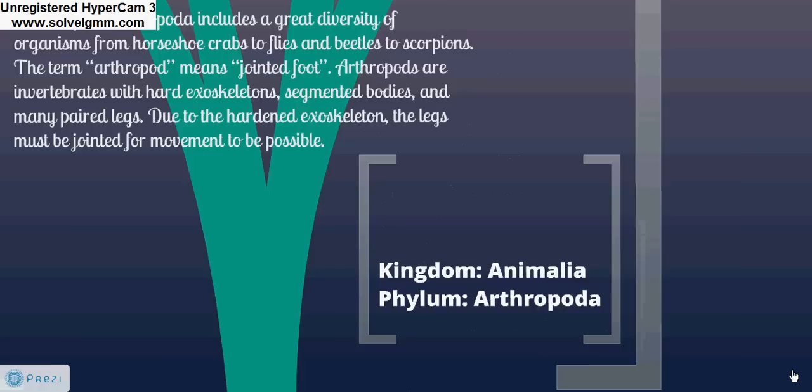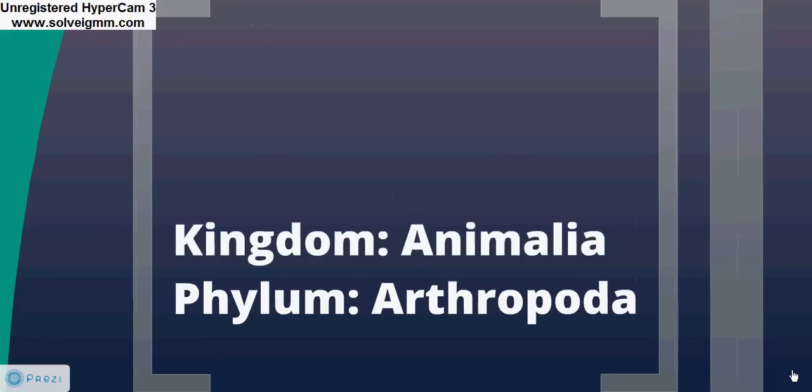While it may seem strange to call a millipede or ant an animal, the phylum Arthropoda is actually part of the kingdom Animalia, right along with mammals, birds, and other creatures we typically consider animals. Now we will explore some of the major groups of arthropods and the features that define these groups.